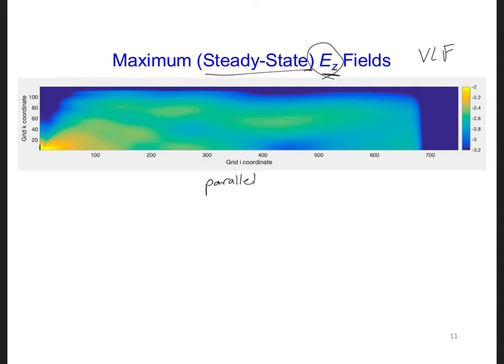So this plot doesn't show the direction of the field components that we're plotting. It only shows the strength of the vertical E fields based on position. We just have to remember that these are the maximum vertical electric field values.